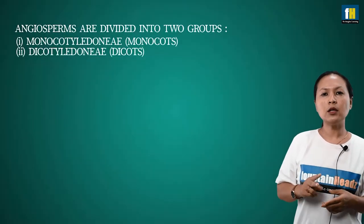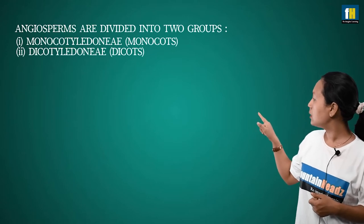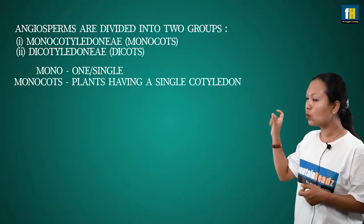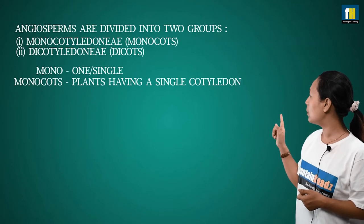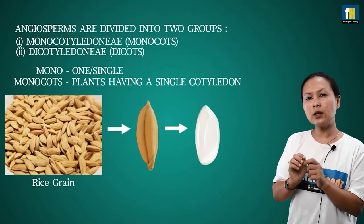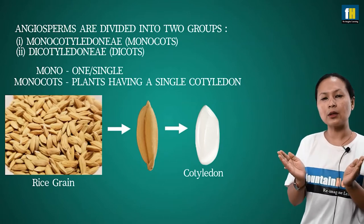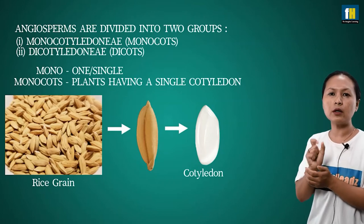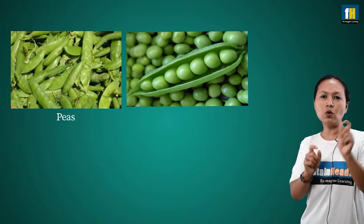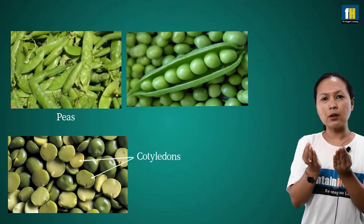Angiosperms are divided into two types based on the number of cotyledons in the seed: monocotyledon and dicotyledon, or monocot and dicot. The word 'mono' means single, so monocots have a single cotyledon. For example, rice — when you look at a rice grain, it has a single cotyledon inside, covered by a brown outer coat.